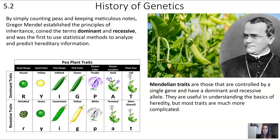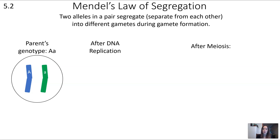Let's go into Mendel's law of segregation. The law of segregation states that two alleles in a pair segregate or separate from each other into different gametes during gamete formation. Here we have a parent genotype of big A, little a — two separate forms of the same gene, with a dominant form represented by the capital and a recessive form by the lowercase. We have one homologous pair. What will this look like after DNA replication and then after meiosis?